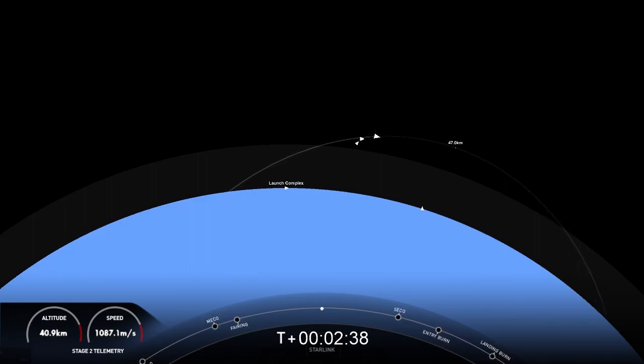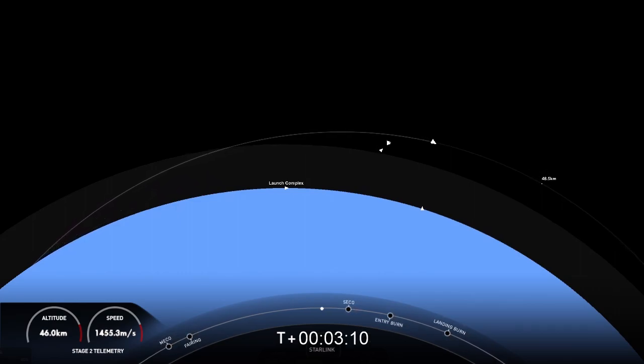Again, these are live views. In order for the first stage to make its way back to our drone ship, it needs to execute two burns. The first is an entry burn where three of the engines on the first stage will reignite, and this will help to slow down the stage as it re-enters the upper parts of the atmosphere. The second burn for the first stage is the landing burn. This is a single-engine burn that will bring the vehicle's speed down rapidly in order to land on our drone ship. We're still a few minutes away from those entry and landing burns. For now, we're enjoying some great views of both stages.